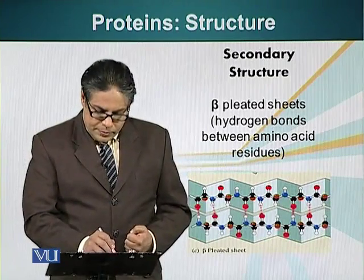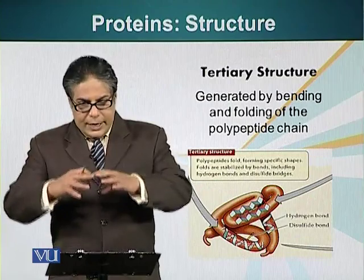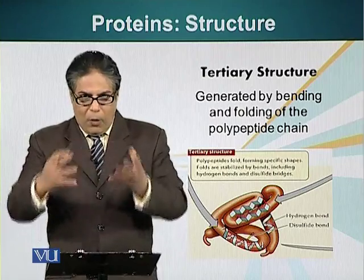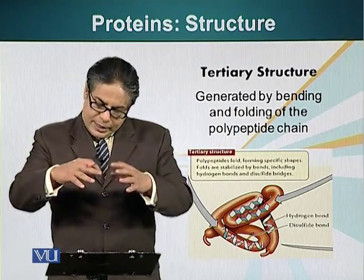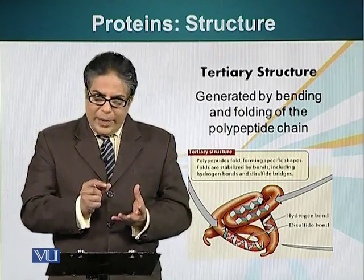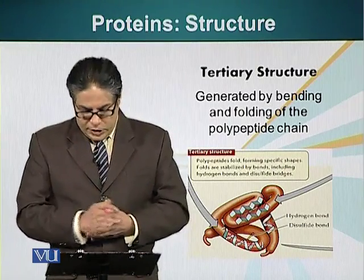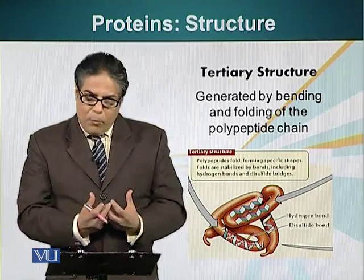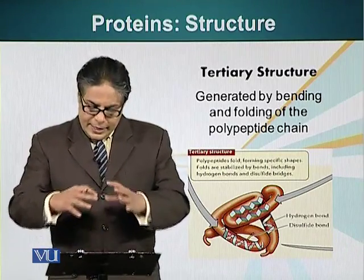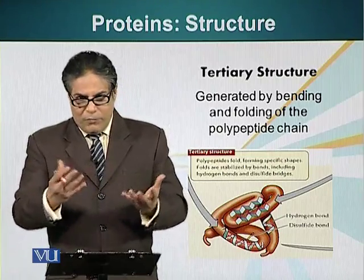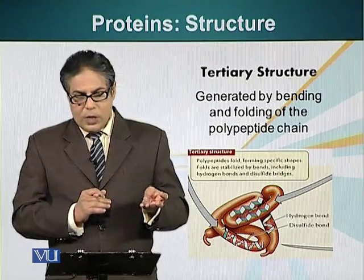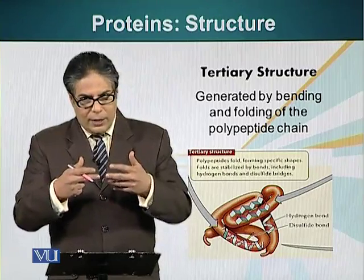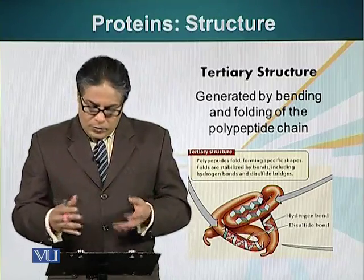Tertiary structure is basically the manner in which the whole protein folds upon itself. This tertiary structure can have smaller domains, which are composed of secondary structures — alpha helices or beta sheets. This folding of a protein upon itself can be stabilized by all types of different bonds: hydrogen bonds, covalent bonds — the sulfur atoms in cysteine forming the disulfide bond — and also ionic interactions.